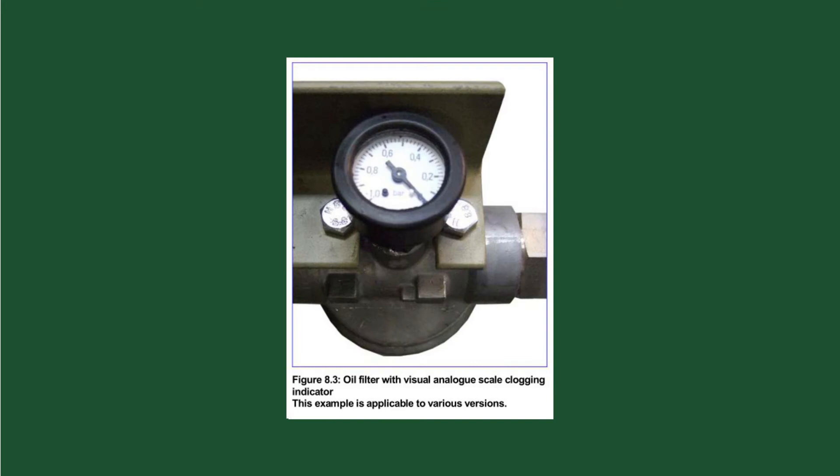The M6 suction filter is equipped with a visual analog scale clogging indicator. During stoppage of the oil pump, the pressure shall indicate 0 bar. Under normal operating conditions, between 0 and negative 0.7 bar, while negative 0.7 to negative 1 bar means clogging, the filter element should be replaced.